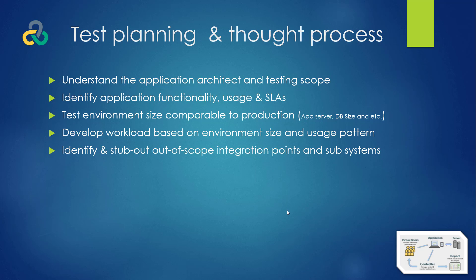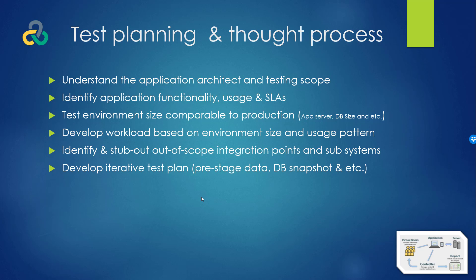Next, you need to identify and stub out out-of-scope integration points and subsystems. When you're testing an application, there will be some integration points connecting to other applications. Those external applications may not be adequately sized to sustain the load you're generating. If your system is dependent on a subsystem that can't handle the load, that subsystem becomes your bottleneck and you won't be able to push the full load through. You need to figure out how to stub it out.